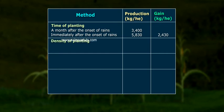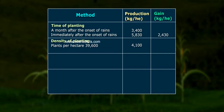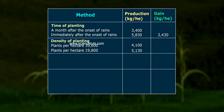For density of planting: at 39,600 plants per hectare, production was 4,100 kg per hectare. At 19,800 plants per hectare, production was 5,130 kg per hectare.